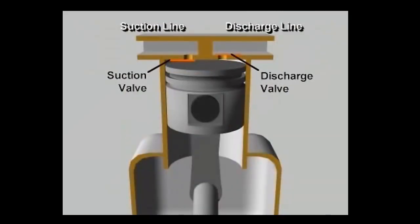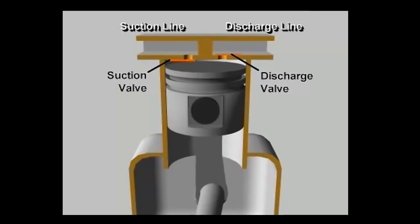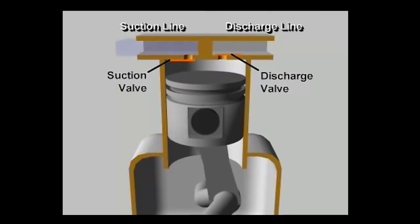Let's follow the compression process in a single cylinder reciprocating compressor during one complete revolution of the crankshaft. Starting with the piston at the top of its stroke, or at top dead center, the piston begins to move downward as the crankshaft rotates.